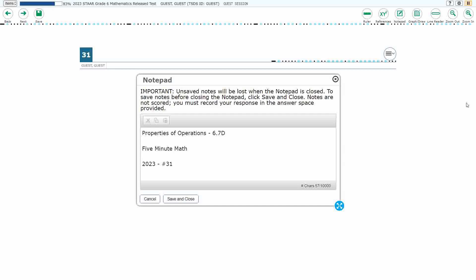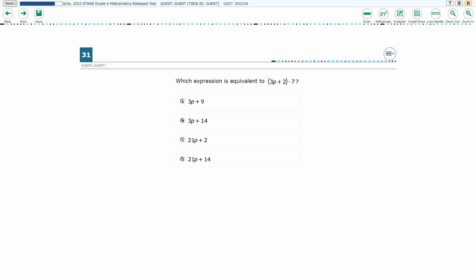Hello and welcome to 5-Minute Math. Today we are looking at the 6th grade concept of Properties of Operations. This is Standard 6.7D in the great state of Texas, and we are using item number 31 of the 2023 released STAR test.